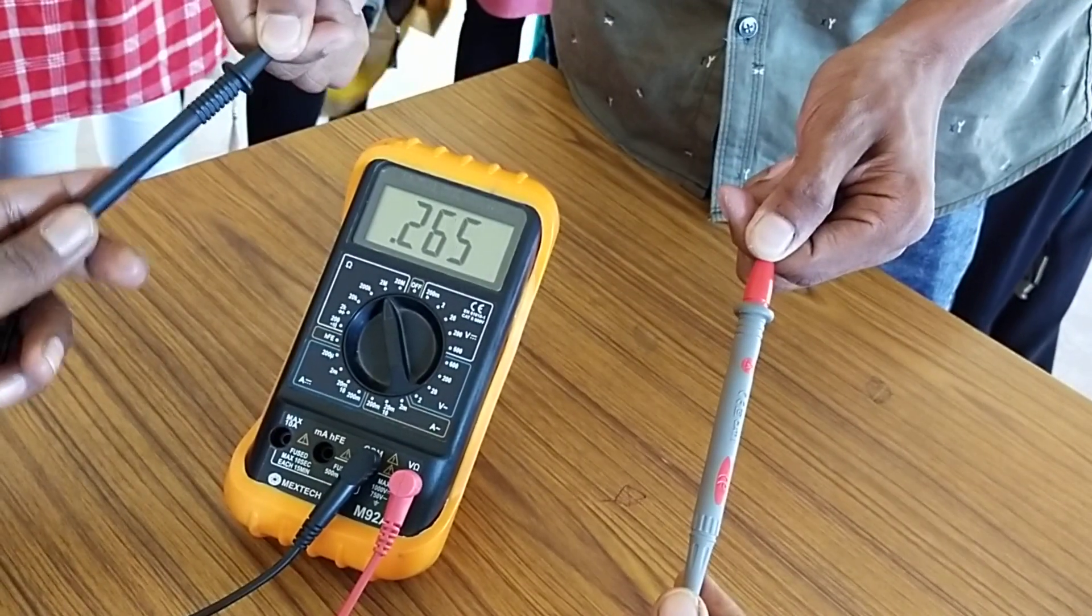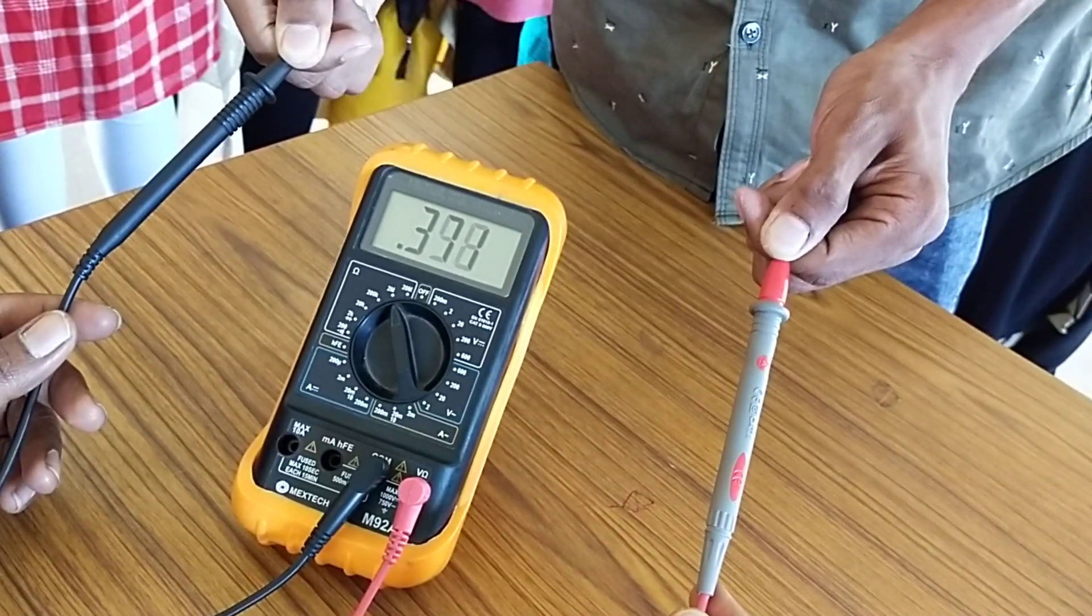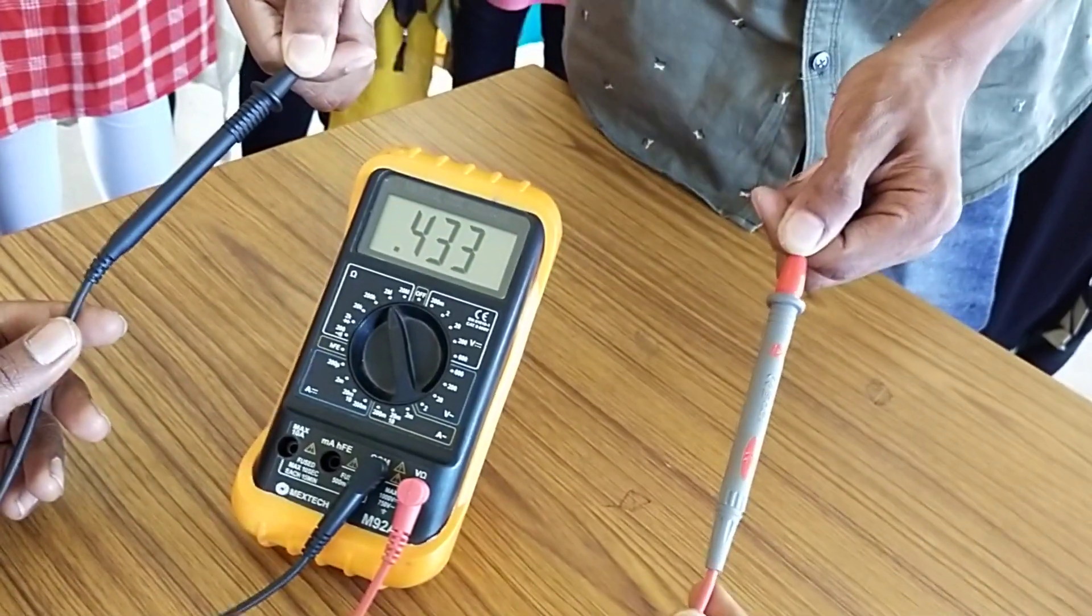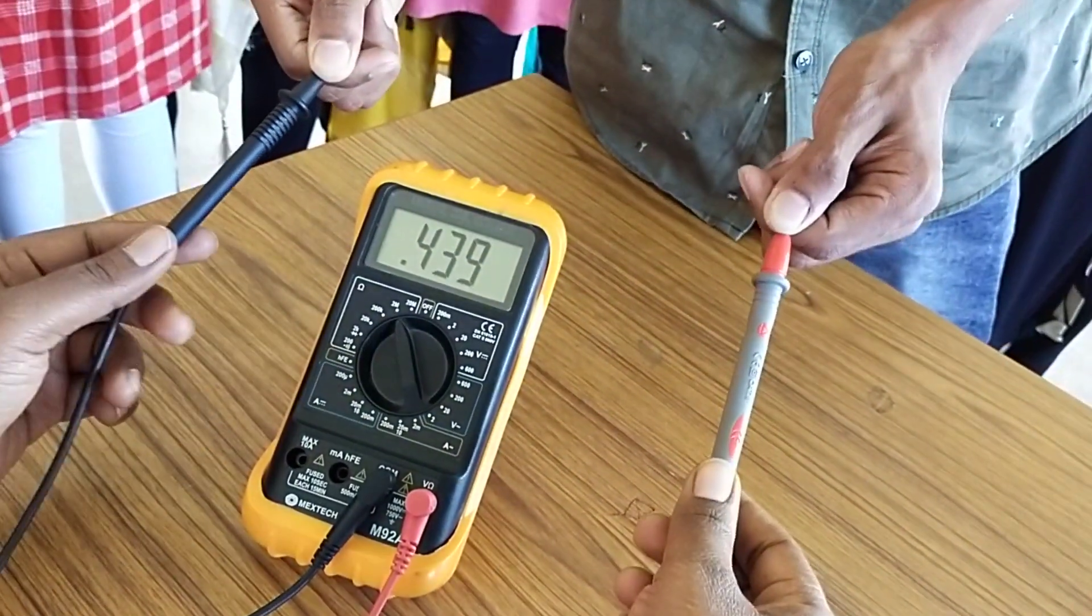0.238 mega ohm, 0.374, 0.42 mega ohm. Now compare the same with the girl's resistance.